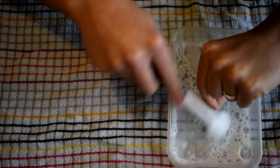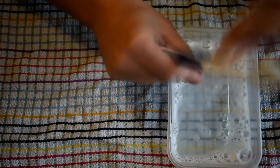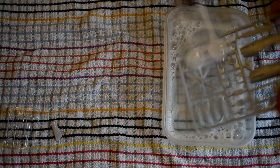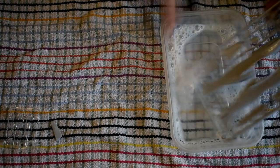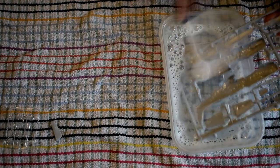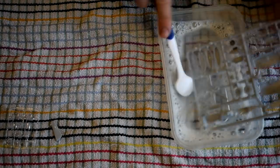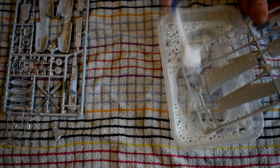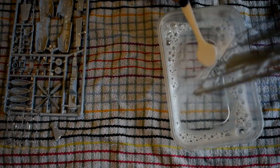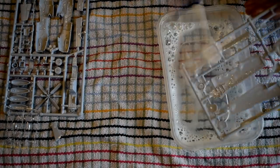The first step in construction was to wash the component parts in warm soapy water. This helps to remove any oil or grease that may be present from the moulding process, and give a better surface for the cement and paints to stick to. The parts were then left to air dry, as wiping with cloths can leave fibres on the surface of the model, which can get stuck in any paint that's applied.